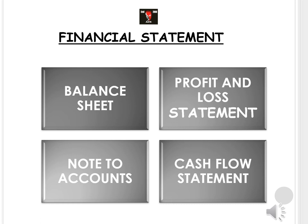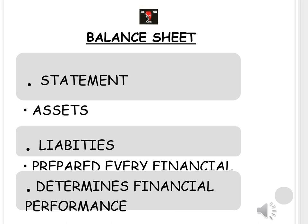A financial statement is a compilation of four major documents that together help us understand and interpret financial performance for a given period of time. The four documents are: one, the balance sheet; two, the profit and loss statement; three, notes to accounts; and four, cash flow statements. The balance sheet is a representation of the assets and liabilities of the company in a period of one year. It can be created in two formats: vertical format and horizontal format.